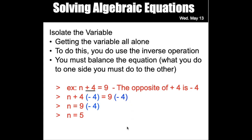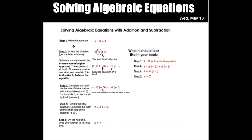Let's look at the steps together. It is really important today that you have this sheet — it is two-sided. One side says solving algebraic equations for addition and subtraction, and the second side says solving algebraic equations with multiplication and division. They're basically the same steps but with some differences. This week we are focusing on addition and subtraction only. While you are doing your work you need to have this sheet in front of you and follow the steps. You're going to need more than one color to write with.